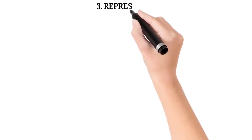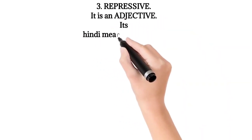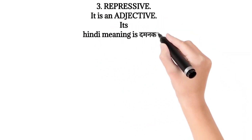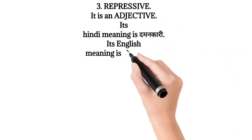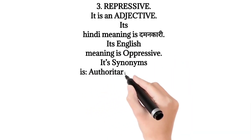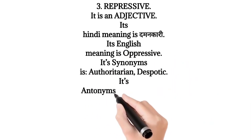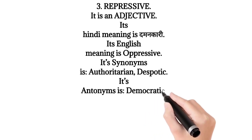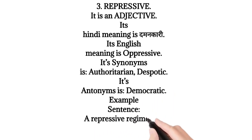3. Repressive — it is an adjective. Its Hindi meaning is 'damankari'. Its English meaning is 'oppressive'. Its synonyms are authoritarian, despotic. Its antonym is democratic. Example sentence: A repressive regime was approved.